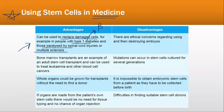People with type 1 diabetes don't have beta cells — the beta and islet cells of Langerhans in the pancreas, which are responsible for making insulin and glucagon. They lack pancreatic alpha and beta cells. Stem cells can be converted into the cells of the islet of Langerhans, enabling insulin production and recovery from type 1 diabetes.